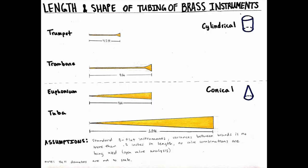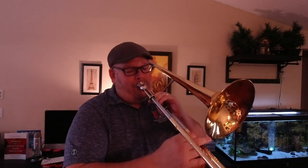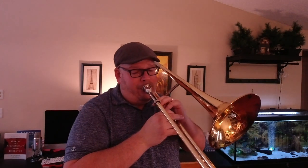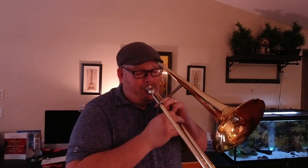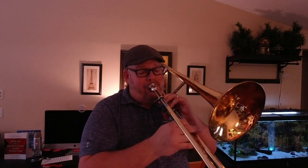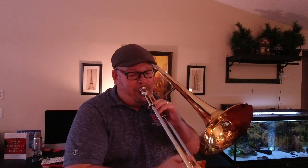The shape of the tubing throughout the instrument also has a huge effect on the tone of the sound. Some instruments are conical, in that the diameter of the tube gradually increases until the bell flares. This causes the air to gradually slow down as it flows, creating a darker, more mellow sound. Other instruments are cylindrical, in which the diameter of the tubing is consistent throughout; therefore the air does not lose velocity, creating a brighter sound.